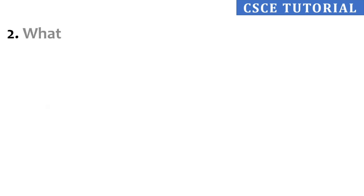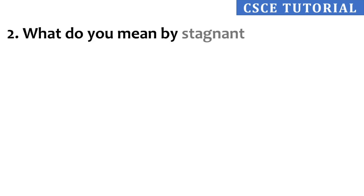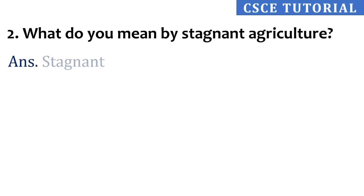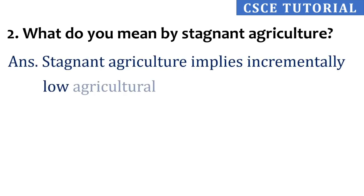Second question: What do you mean by stagnant agriculture? Its answer is, stagnant agriculture implies incrementally low agricultural production. Stagnant agriculture means that whatever is produced is very low — the farm output is less. So, this means low agriculture production.